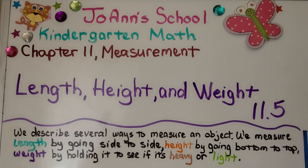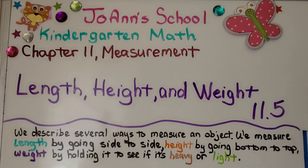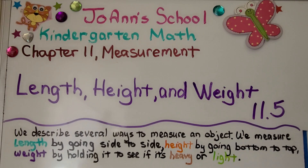Lesson eleven point five: length, height, and weight. We describe several ways to measure an object. We measure length by going side to side, height by going bottom to top, and weight by holding it to see if it's heavy or light.